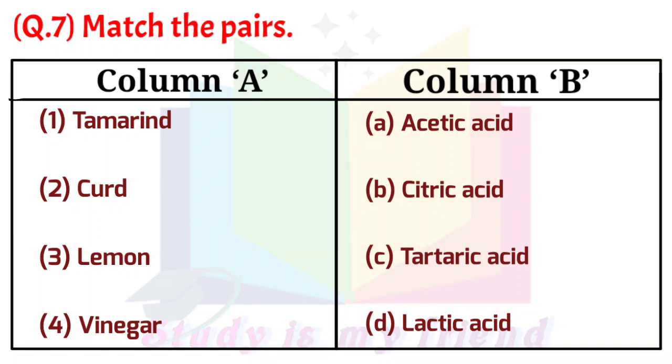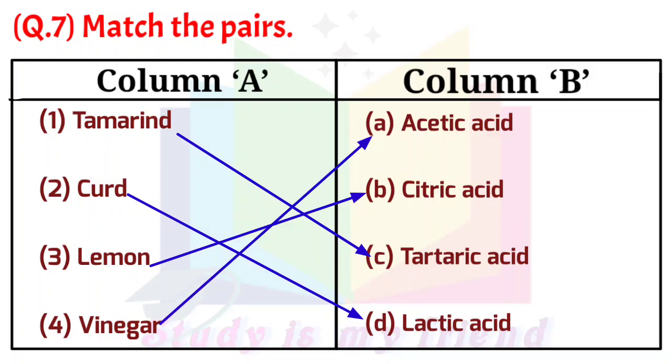Answer: 1. Tamarind - C. Tartaric acid. 2. Curd - D. Lactic acid. 3. Lemon - B. Citric acid. 4. Vinegar - A. Acetic acid.